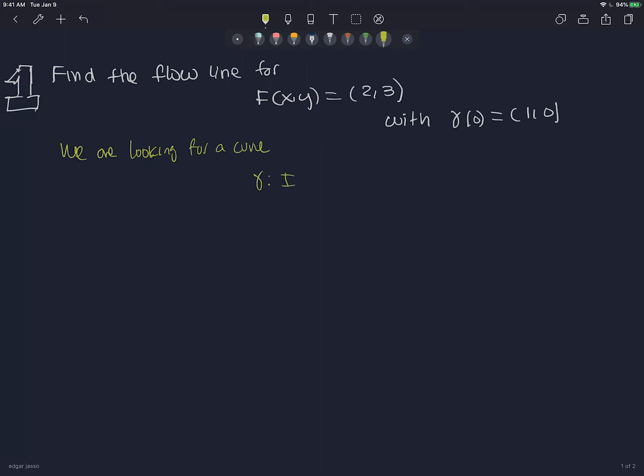So the property of a flow line is that we're looking for a curve gamma, from I to R², with the derivative at each point to be the same as the vector field at each point. I'm going to write it like gamma prime equals F of gamma.